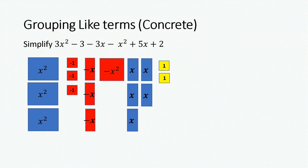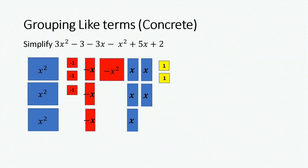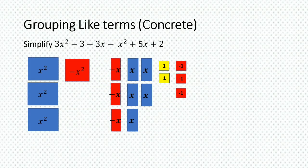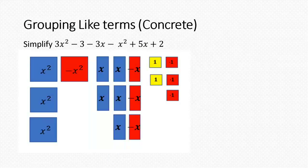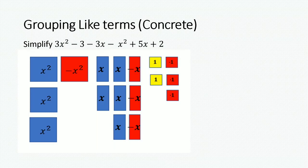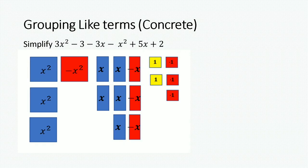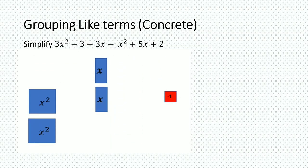Now that we have modeled our expression, the next thing to do is group the tiles that share the same characteristics. Remember, x squared goes with x squared, x goes with x, and constants or units go together. Now you can see how the nullifying effect can take place, because we have x squared minus x squared, and we see x minus x, and also 1 minus 1. In every area where there is a nullifying effect, we simply remove those tiles.